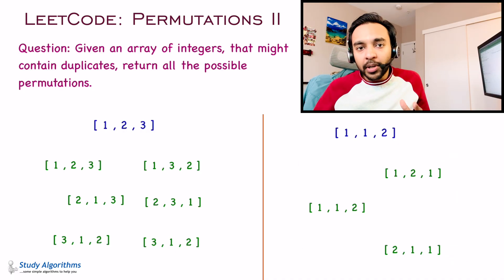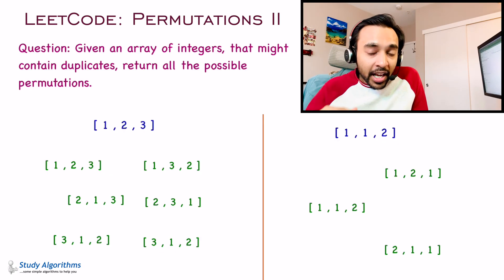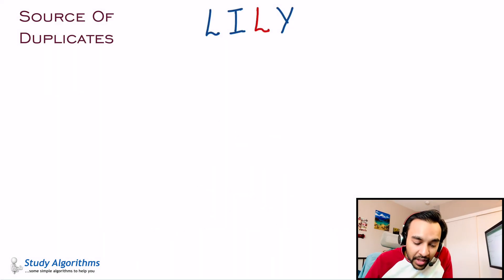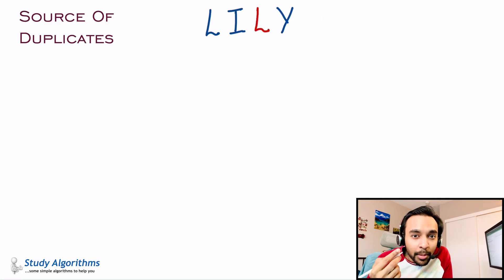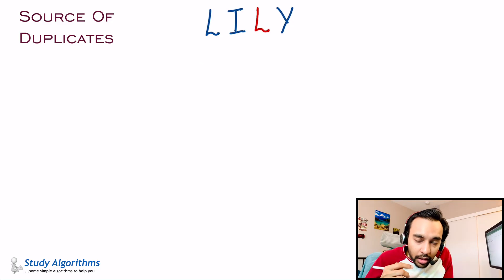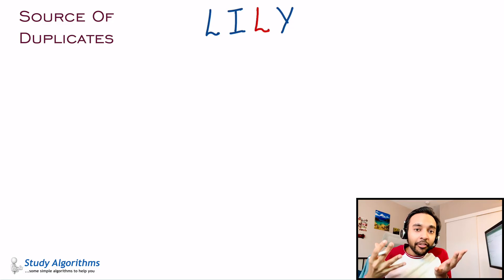Now if you have understood the problem statement and want to try it out on your own, feel free. Otherwise, let us dive into the solution and first of all try to figure out where all these duplicates are actually coming from. To understand the source of duplicates, let us take a generic example. Rather than integers, I'm taking an example of characters because understanding things with characters is pretty easy. So I have this generic string and it has a repeated character, the character L. I have highlighted the duplicate character in a different color, and now we will try to create the state space tree and see why we are getting those duplicates.